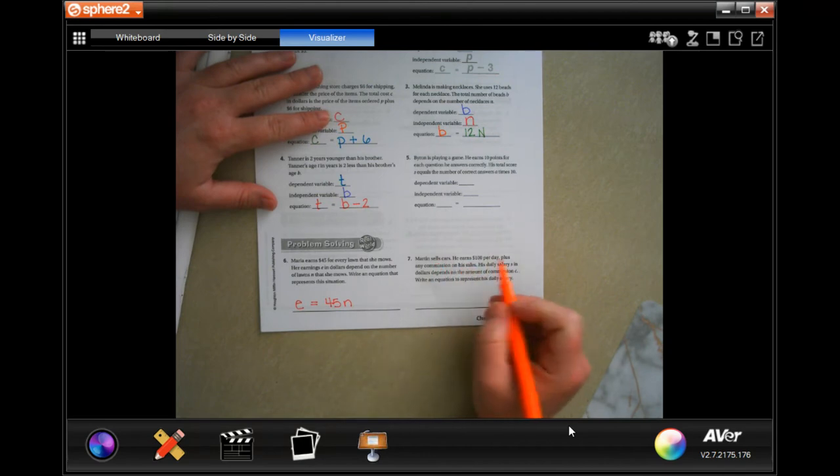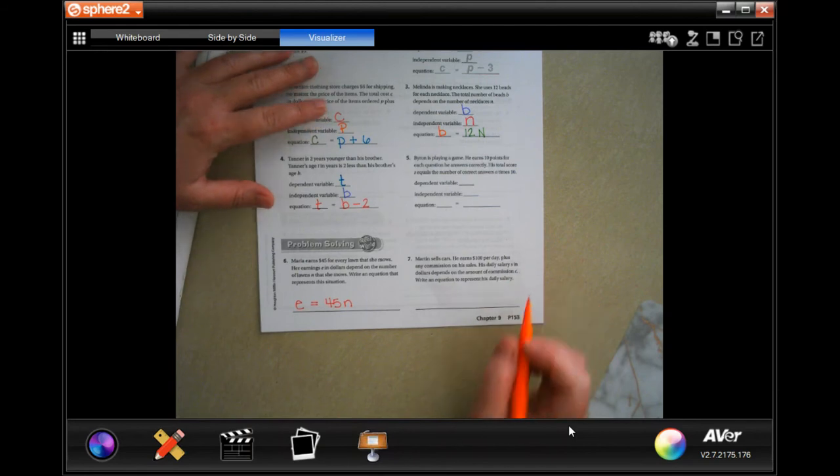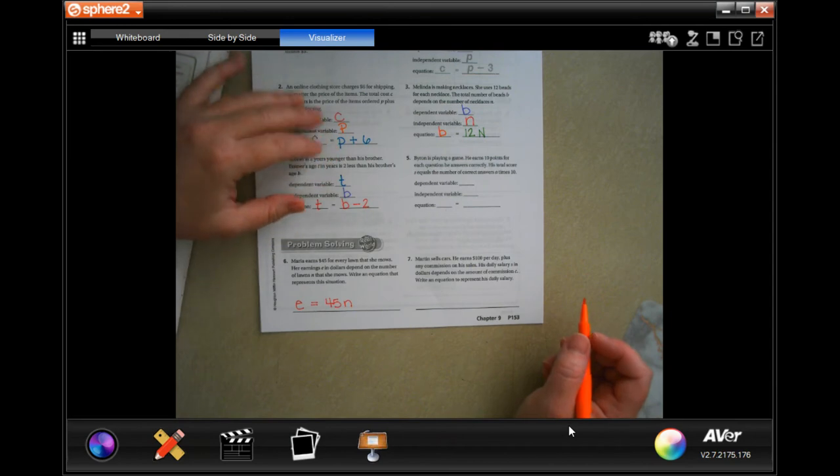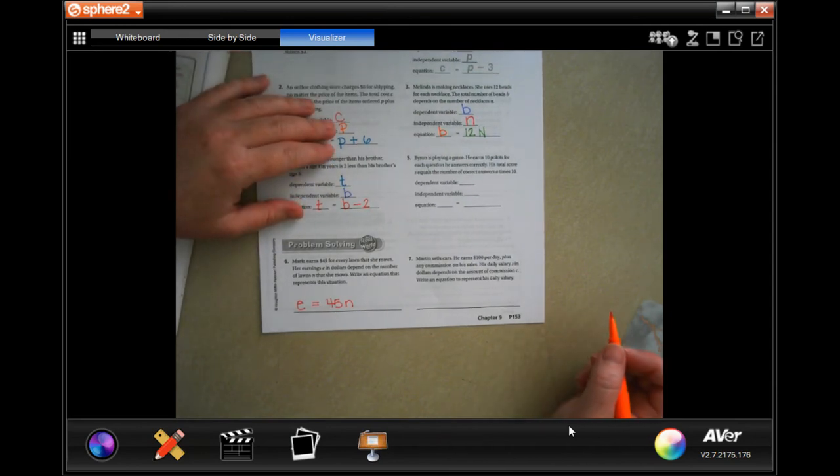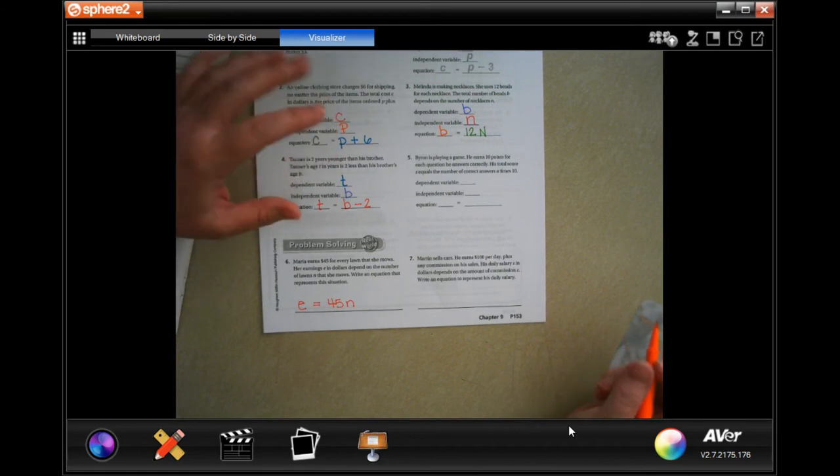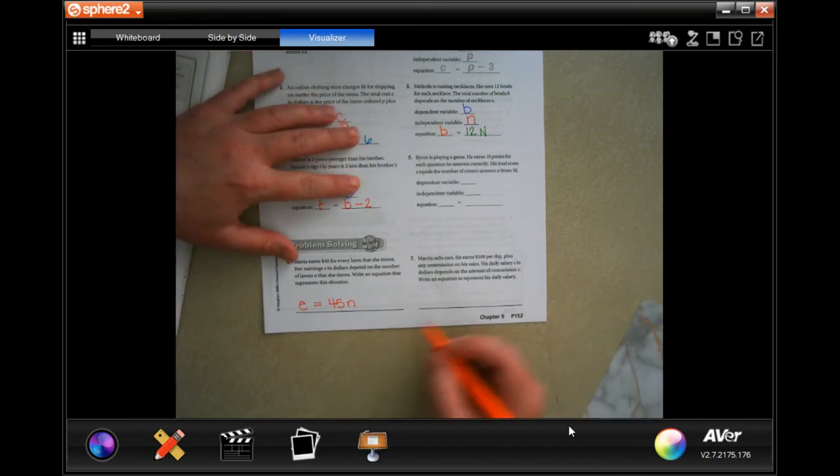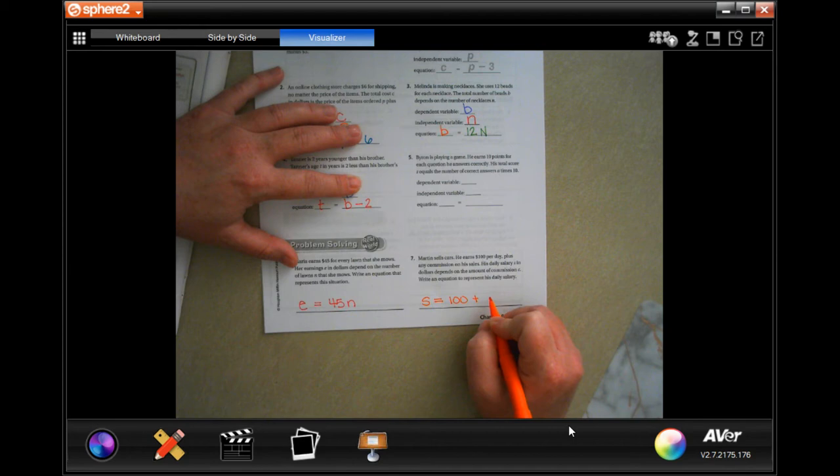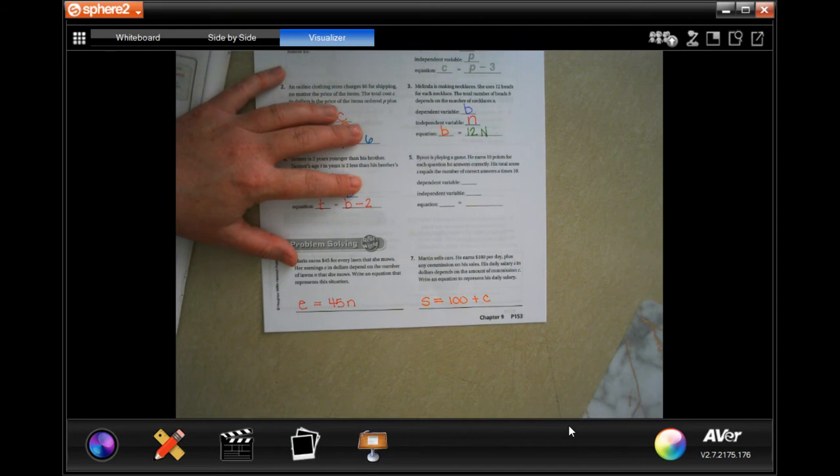Martin sells cars. He earns $100 per day plus any commission on his sales. His daily salary, S, in dollars depends on the amount of commission, C. Write an equation that represents the daily salary. Well, his salary depends, he has $100 no matter what, plus his commission.